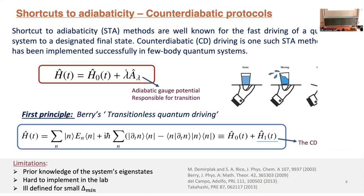That is one of the main drawbacks for using this concept in adiabatic quantum computing. In adiabatic quantum computing you want to find the ground state, but if you already have knowledge of the instantaneous eigenstates, that means you already solved the problem. Furthermore, even if you somehow calculate this term, realizing it experimentally is very challenging for many-body systems, because it contains non-local multi-qubit interaction terms — making it difficult to realize even in analog quantum computers.